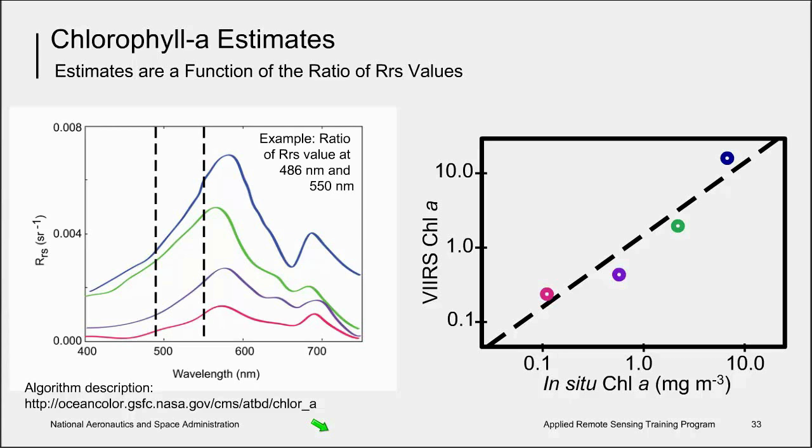The chlorophyll A algorithm is a fourth-order polynomial relationship between a ratio of remote sensing reflectance at two wavelengths and chlorophyll A. Or simply stated, the ratio of two remote sensing reflectance measures are used as inputs into the algorithm, and the result is an estimate for chlorophyll A. Validation of the chlorophyll algorithm is performed by collecting sea-truth measurements of chlorophyll within an hour of the satellite overpass. These in-situ sea-truth chlorophyll A measurements are then compared to the chlorophyll derived from satellite measurements, and uncertainty is estimated.